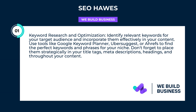Keyword research and optimization: identify relevant keywords for your target audience and incorporate them effectively in your content. Use tools like Google Keyword Planner, Ubersuggest, or Ahrefs to find the perfect keywords and phrases for your niche.